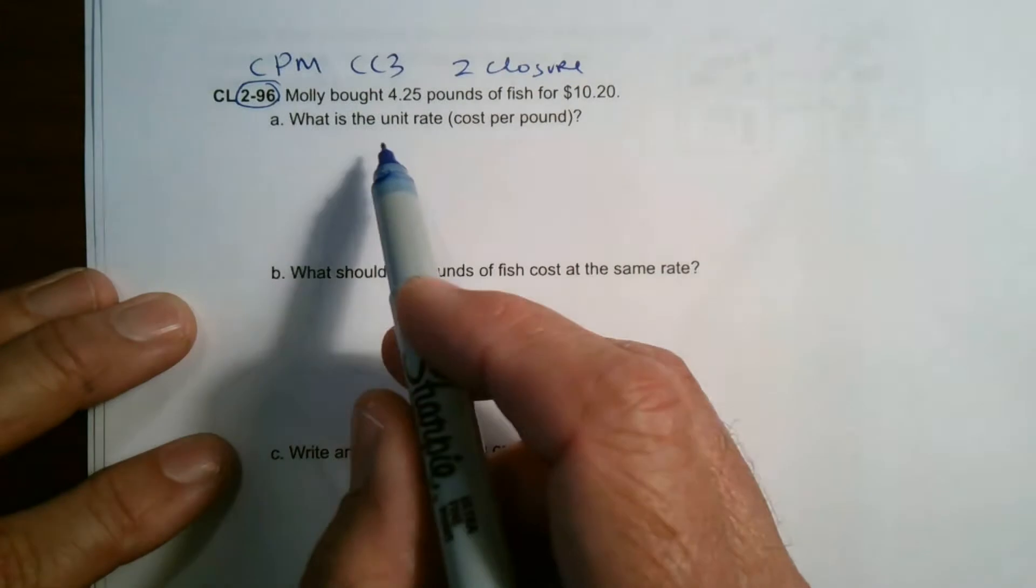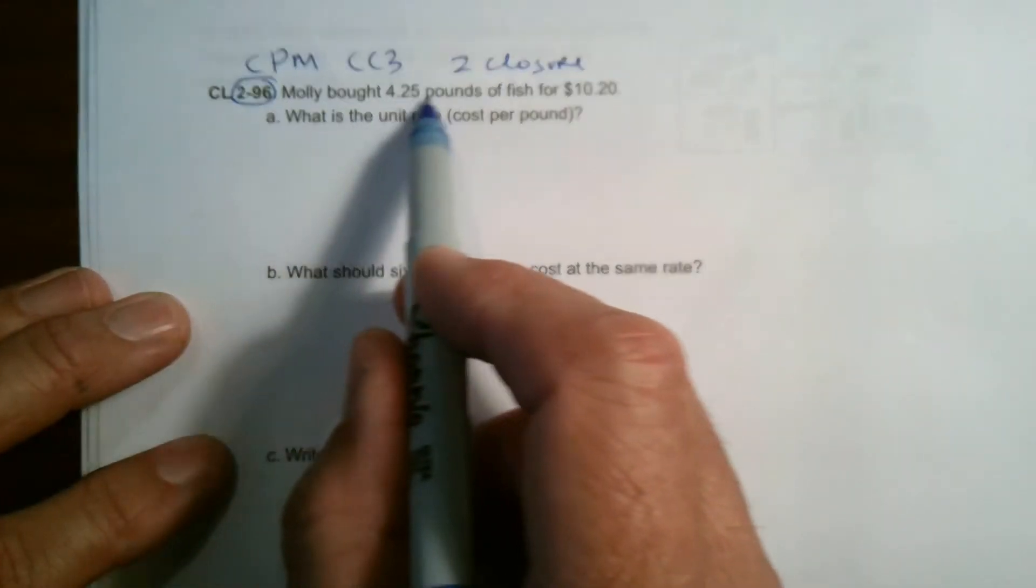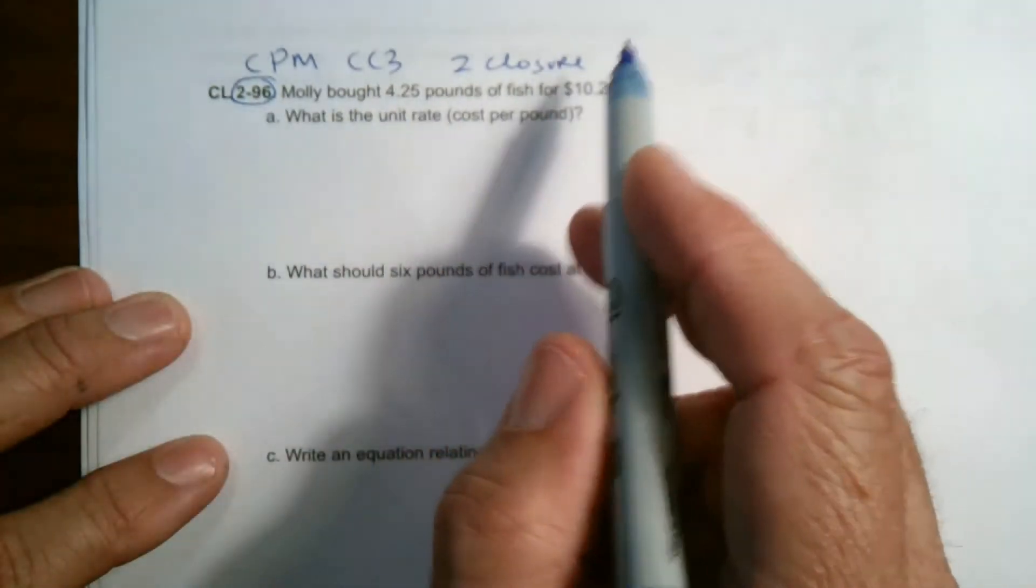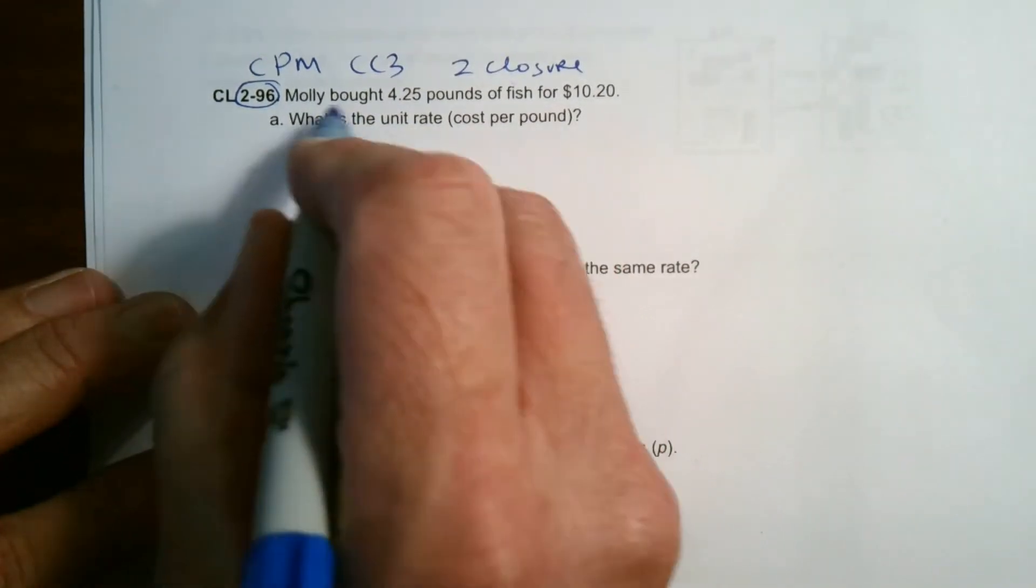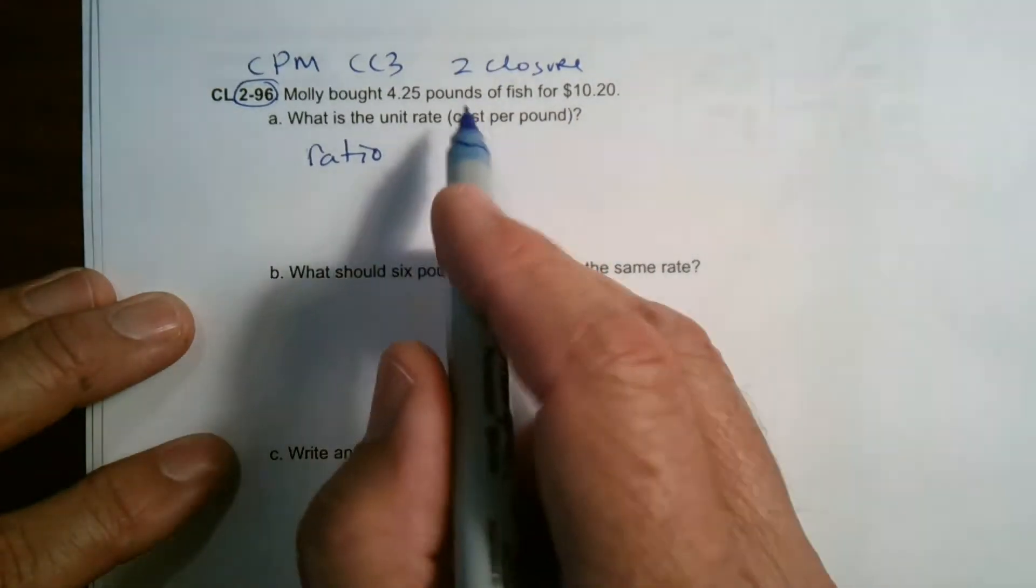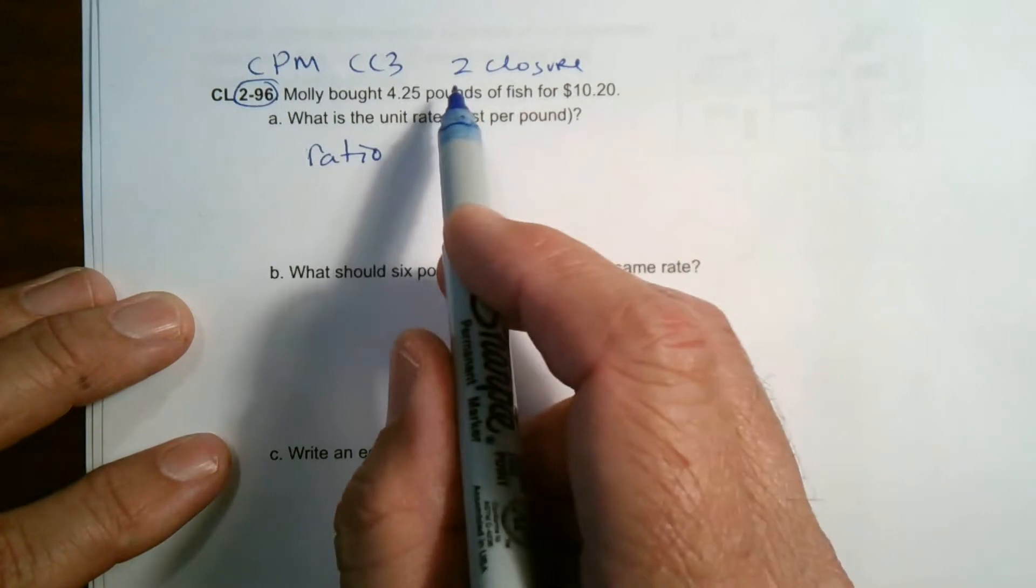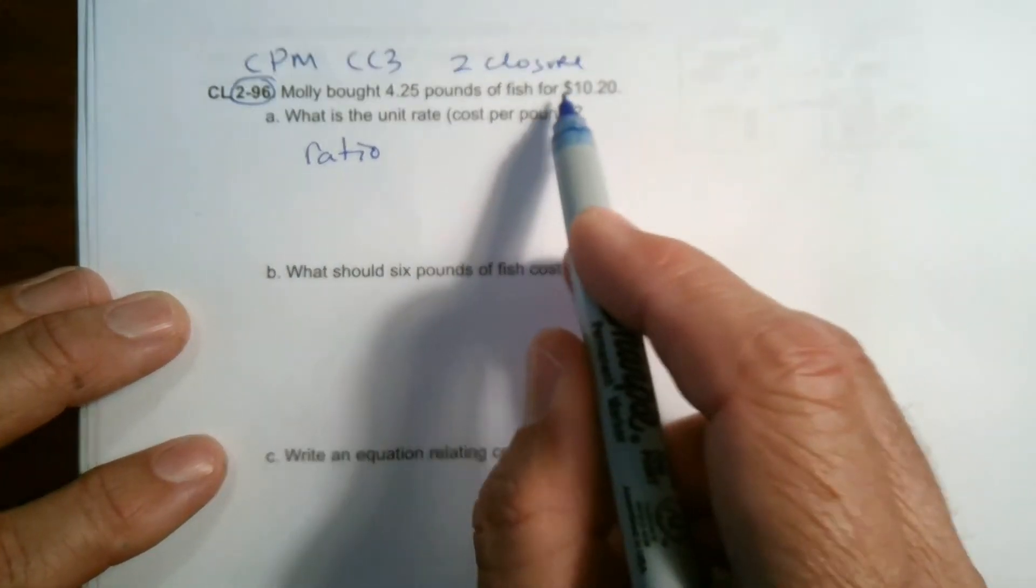It says, what is the unit rate cost per pound? So from that information up top, I can write a ratio, right? I'm going to start by writing my ratio given what I have. Ratio, remember, is a comparison of two things. I'm comparing pounds of fish to cost.